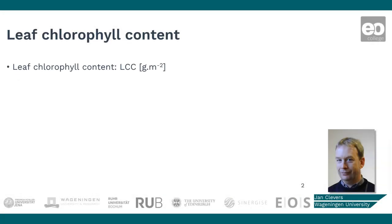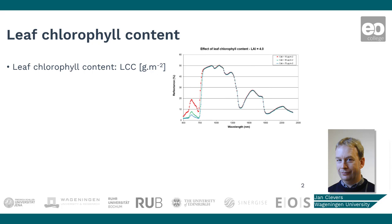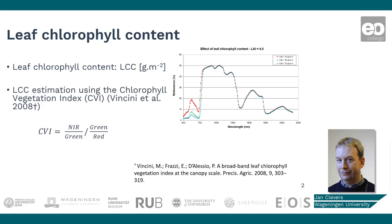Since photosynthesis occurs in chlorophyll molecules in green plant leaves, the leaf chlorophyll content, called LCC, is also an important biophysical parameter for farmers to know. The graph on this slide illustrates that leaf chlorophyll content mainly affects the visible part of the spectrum. More chlorophyll simply means more absorption and thus less reflectance. A vegetation index can be used in a statistical approach for estimating the leaf chlorophyll content.